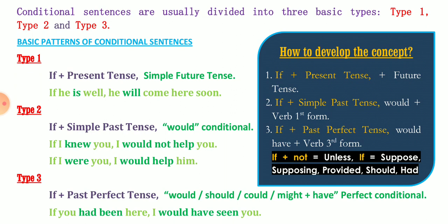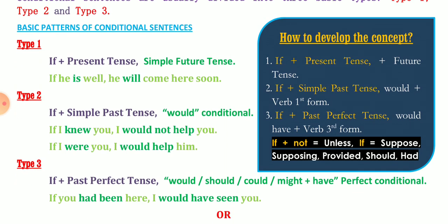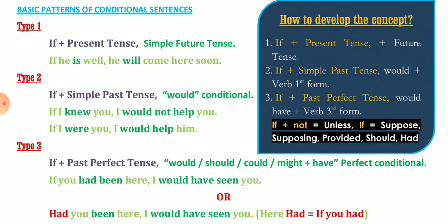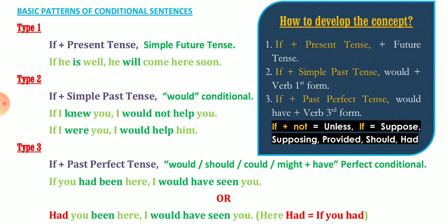Type 3: if plus past perfect tense, then the second sentence uses 'would/should/could/might have' plus verb third form — this is called the perfect conditional. For example: 'If you had been here, I would have seen you.' The same sentence can also be written as: 'Had you been here, I would have seen you.' Here 'had' replaces 'if' and the second sentence remains unchanged.